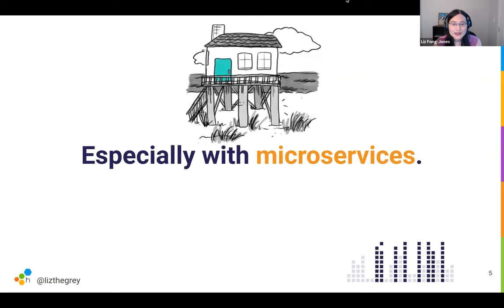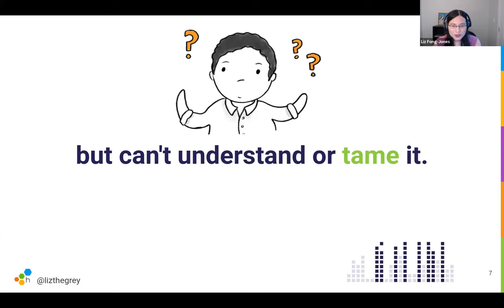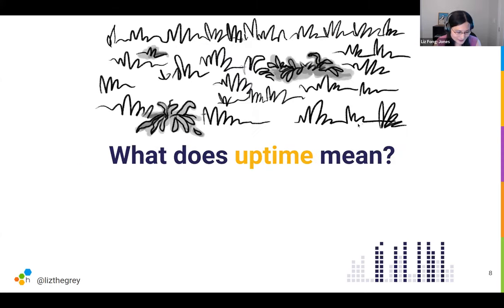We have to figure out how to spread that load without overwhelming the people developing the product with complexity when asking them to take on operational responsibilities. This is especially true with microservices — there's no longer one service that one person can keep in their head. It takes a lot of complexity to scale out our services. Some of it is necessary, some is technical debt, but we cannot rely on keeping that knowledge in one person's head or relying on heroism.